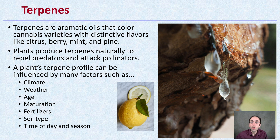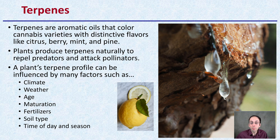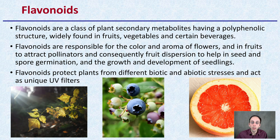Terpenes are not unique to cannabis, but definitely noticed — as you hear a lot of people talk about terpene profiles regarding a cannabis flower or end product. The plant's terpene profile can be influenced by many factors: climate, weather, the age of the plant, maturation, fertilizers, soil type, the time of day, and also the season. All of those can impact the terpene profile that a plant may have.